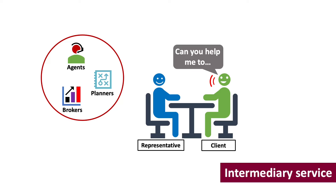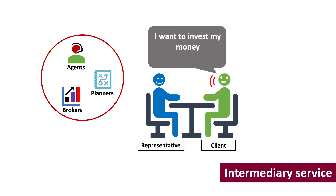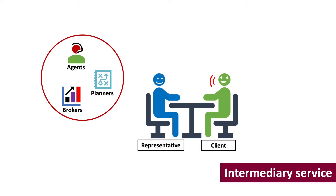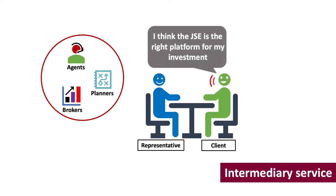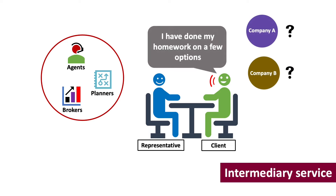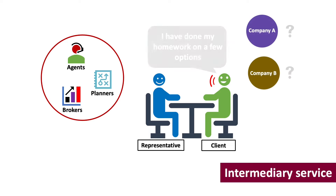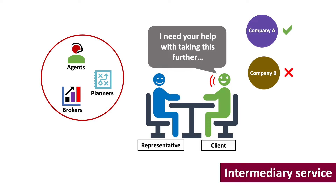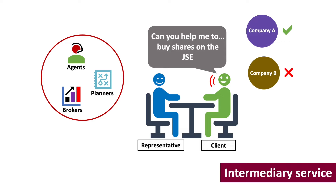Here is an example to help you understand the difference between advice and intermediary service. Think of intermediary service as a client wanting to buy a financial product and needing help to complete the transaction. For example, a client wants to buy listed shares and asks a rep of an FSP to buy on their behalf. Here the client is acting on his or her own free will and only requires a rep to process the transaction.